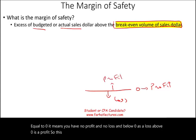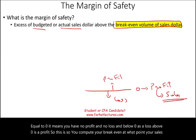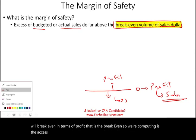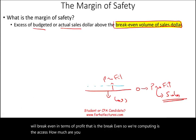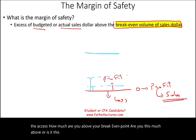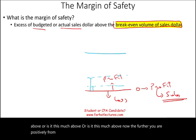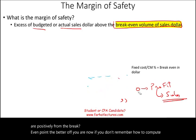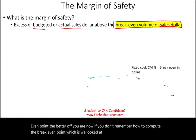So you compute your break-even — at what point your sales will break even in terms of profit? This is the break-even. What we're computing is the excess: how much are you above your break-even point? The further you are positively from the break-even point, the better off you are. If you don't remember how to compute the break-even point, which we looked at in the prior session, this is part of your CVP — cost-volume-profit analysis.